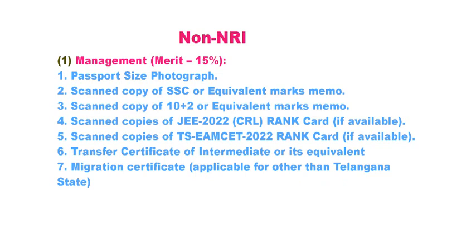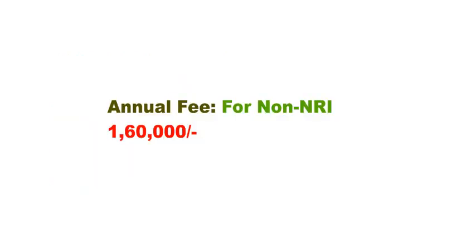Regarding the annual fee: for non-NRI quota, the fee is the same as A category. A category is the convener quota fee structure.